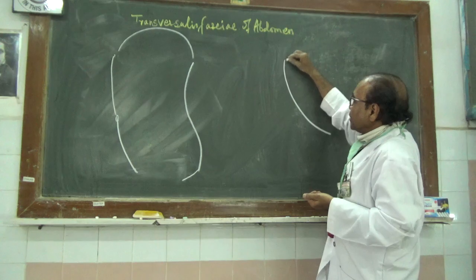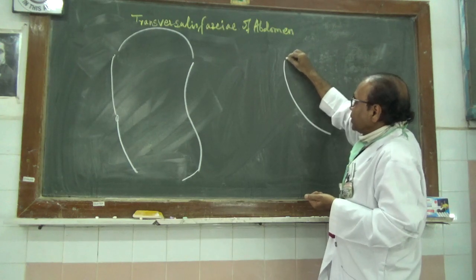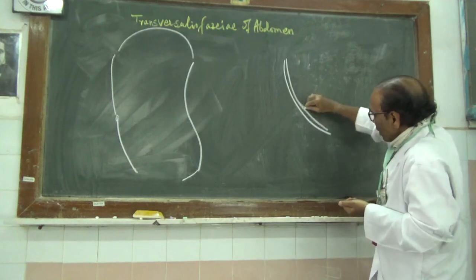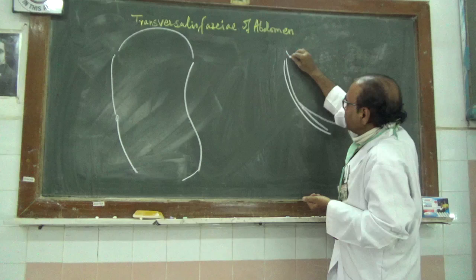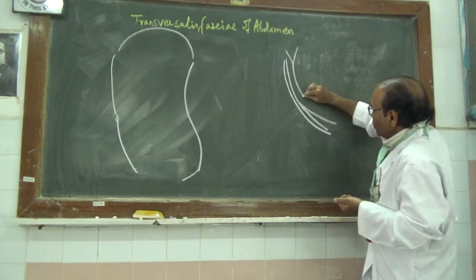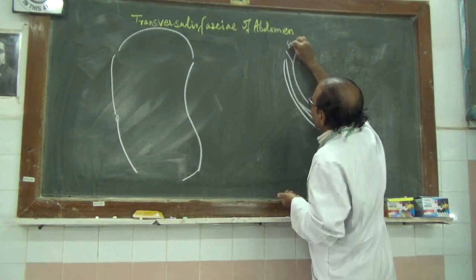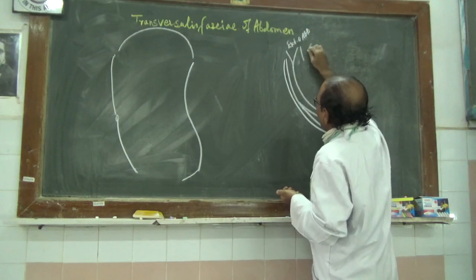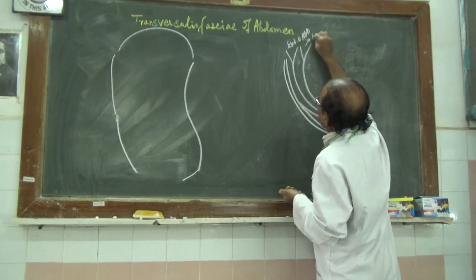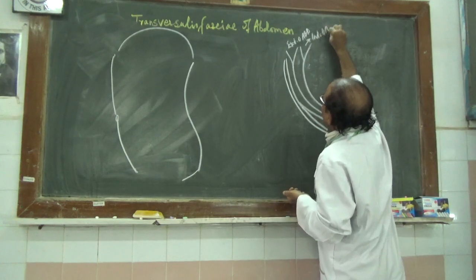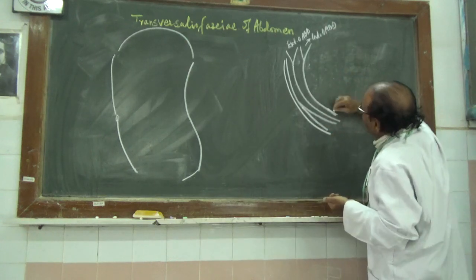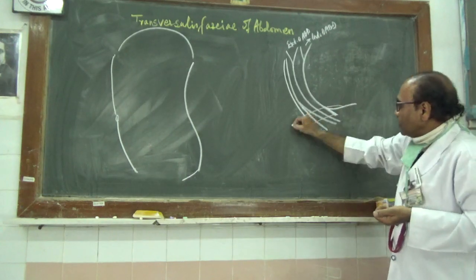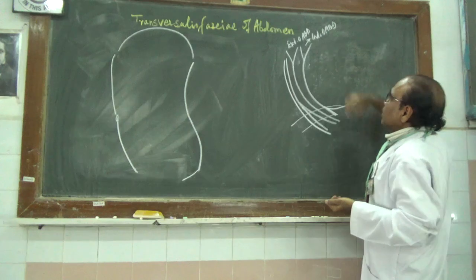The transversalis fascia covers the skin, superficial fascia — two layers of it — then the external obliquus abdominis and its aponeurosis, then the internal obliquus abdominis and two layers of it, which will be going to form the anterior layer of the rectus sheath and the posterior layer of the rectus sheath.